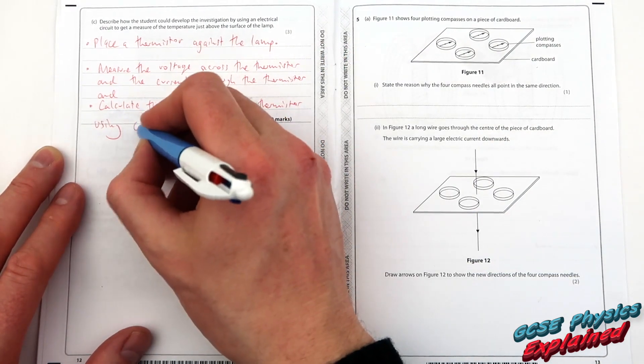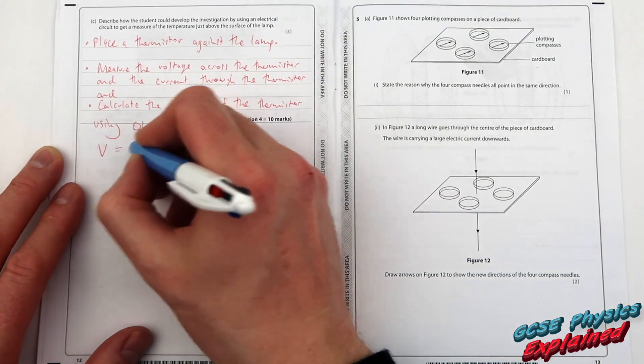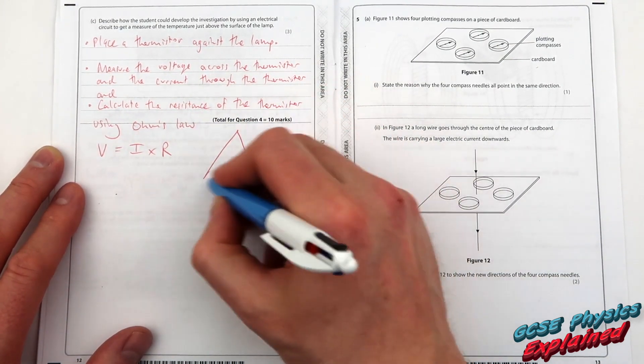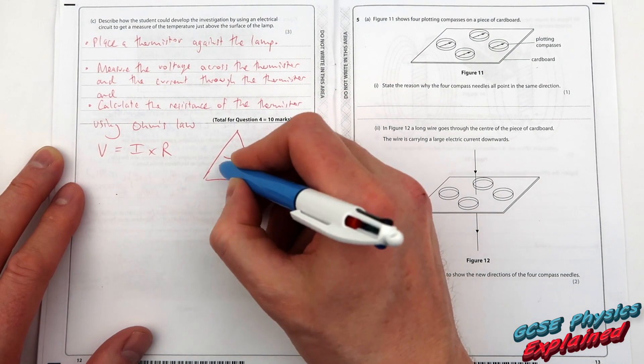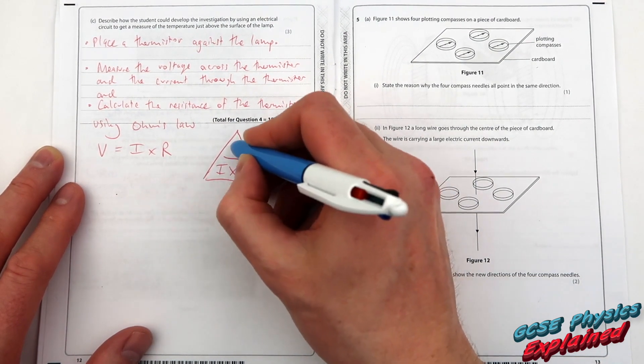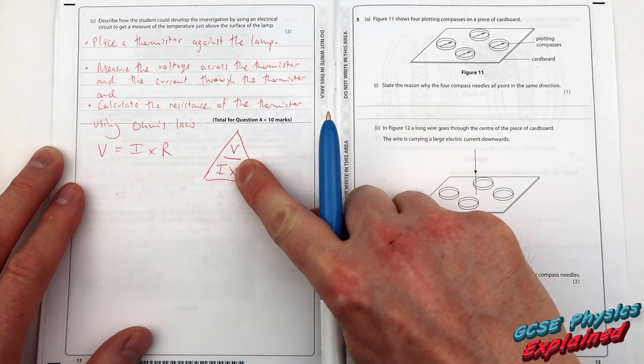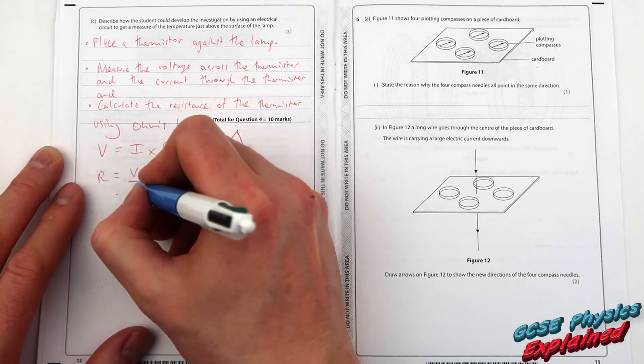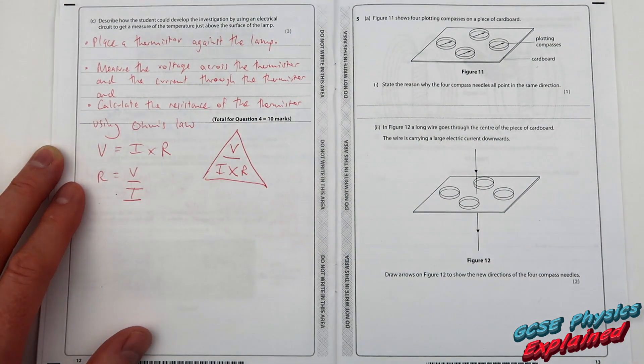Now we can use Ohm's law again. Voltage equals current times by resistance and rearrange it to find resistance. R equals V over I. And there we are.